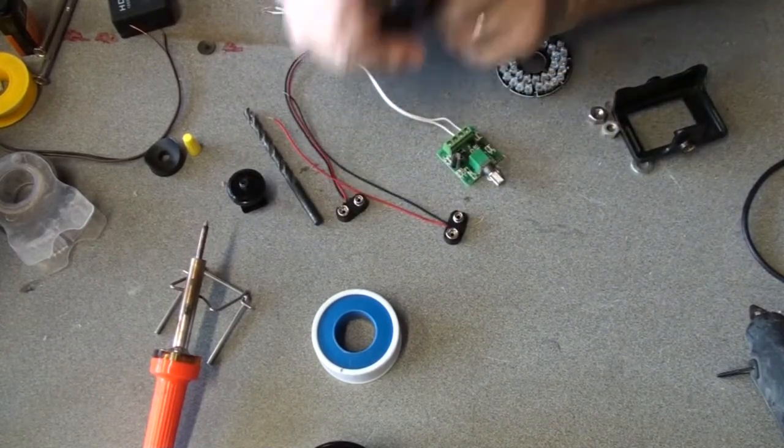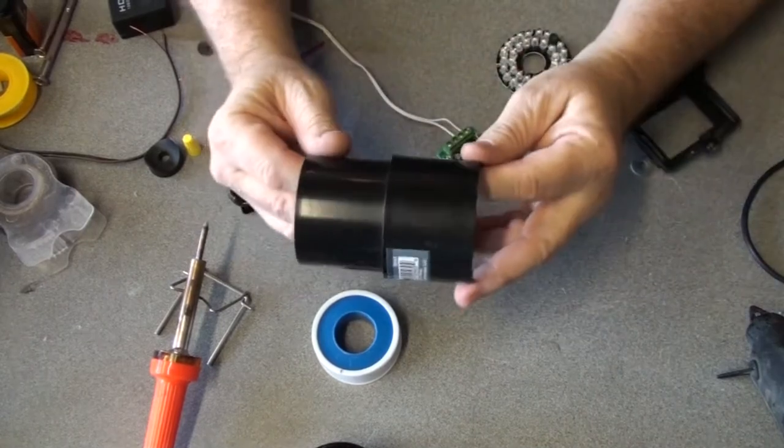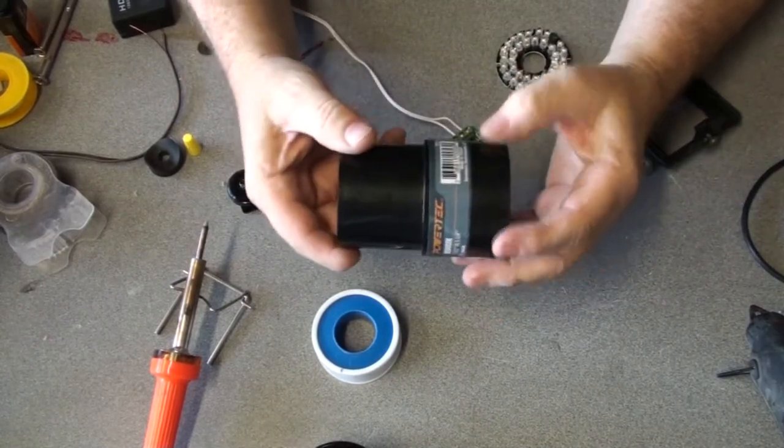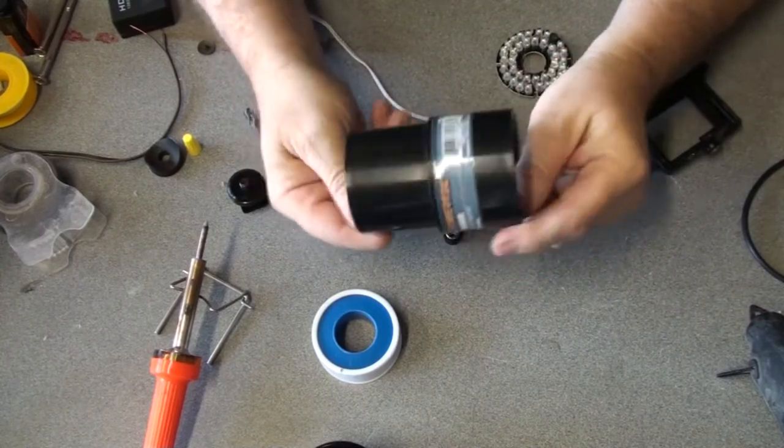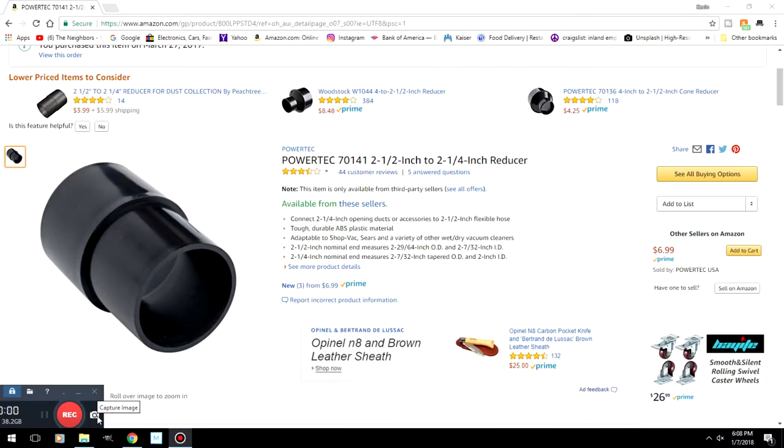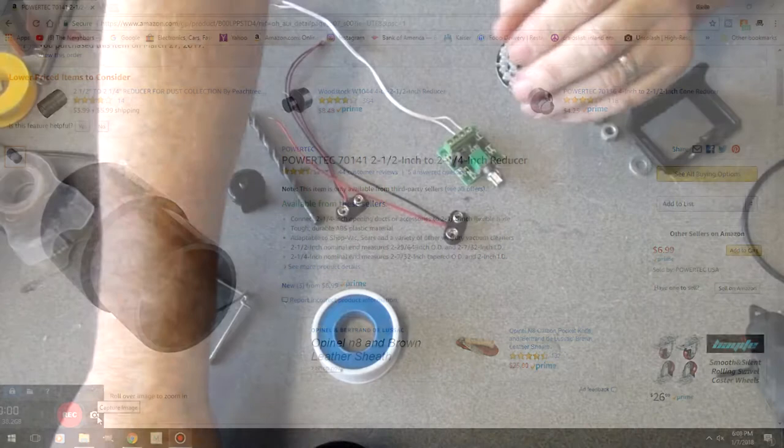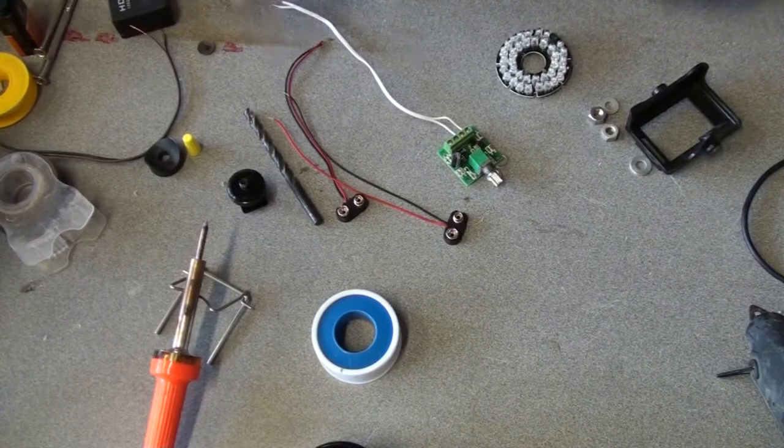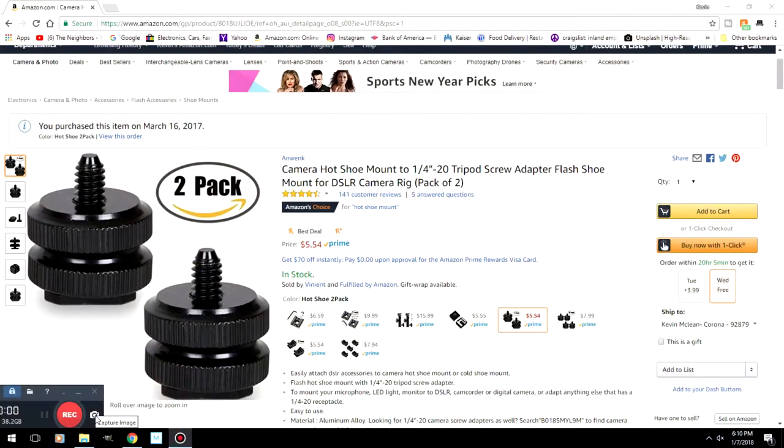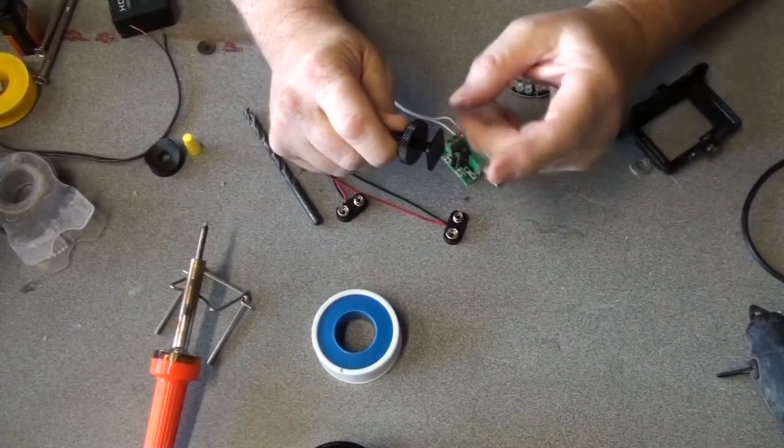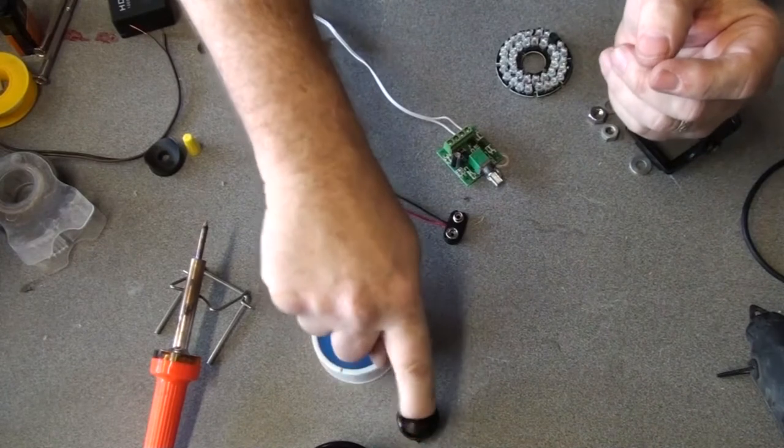So this is what we're going to need for this build. You're going to need a 2.5 inch to 2.25 inch vacuum hose reducer. It's about between $5 and $7. You're going to need a camera hot shoe. These I bought, a pair of them, for $5.54 for the quarter inch.